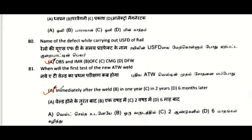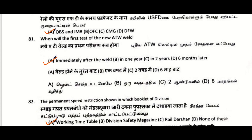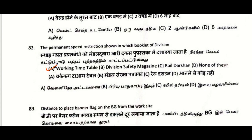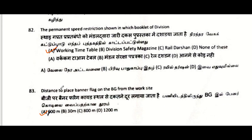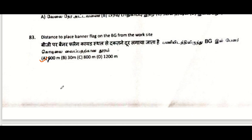When will the first test of the new AT weld be done? The new AT weld should be tested immediately after the weld or maximum up to one month — option A is the right answer. The permanent aspect restriction is shown in which booklet of the division: Working Timetable.